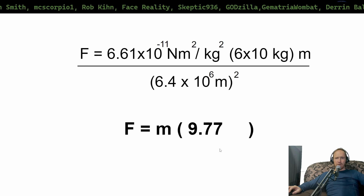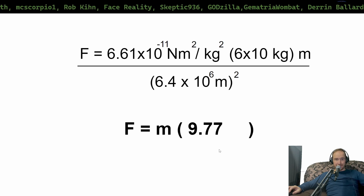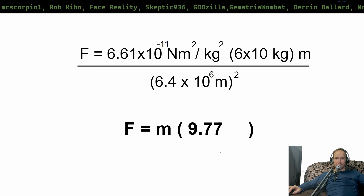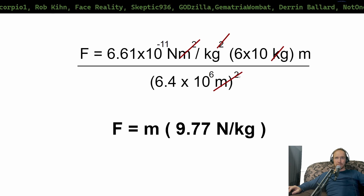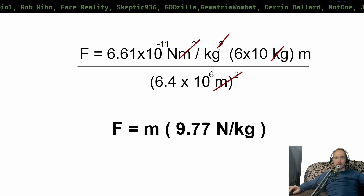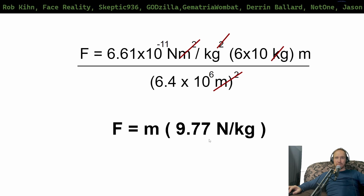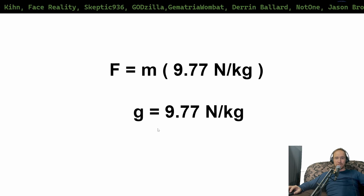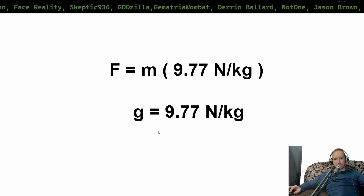But now you say, hang on, that's still not little g yet. Let's do this. We have to cancel out the units. So, we cancel the meter squared by the meter squared, and we took the kilogram out, which left us with kilogram of one. And then it gives us 9.77 newtons per kilogram. That means little g is equal to 9.77 newtons per kilogram.